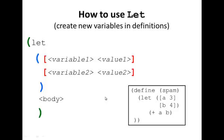Here's an example. This is creating a function called spam that takes in no arguments, and it creates two new variables, a and b. a is 3, b is 4, and then inside the body of this let here, it returns a plus b, which will return 7.